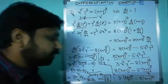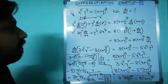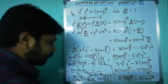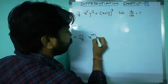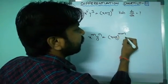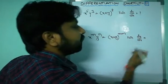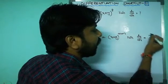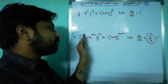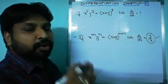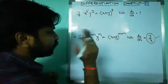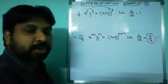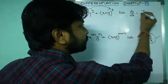Now the shortcut: if x^m times y^n equals (x+y)^(m+n), then dy/dx = y/x directly — no need to solve the full problem. Check the condition: the powers of x and y must sum to the power of (x+y). In our problem, m=5 and n=3, and 5+3=8, which matches the power of (x+y)^8. So dy/dx = y/x immediately.